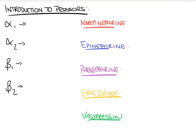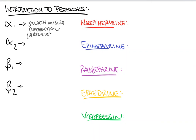Let's look at the alpha-1 receptor first. When activated, it primarily causes smooth muscle contraction. This happens in our arteries, which ultimately results in arterial constriction, leading to an increase in our blood pressure. So overall, alpha-1 leads to vasoconstriction.